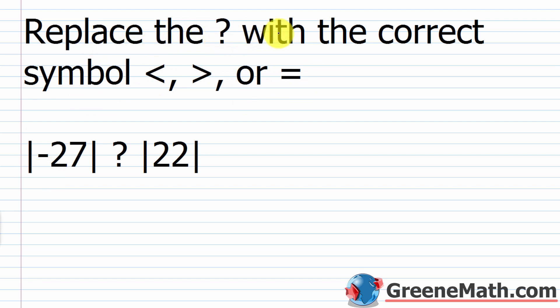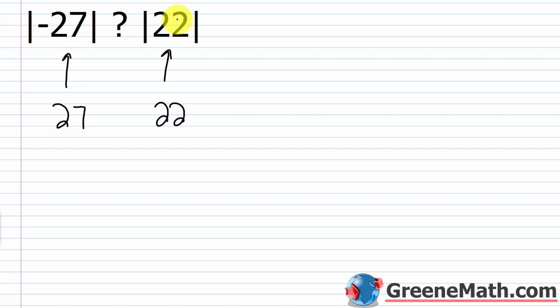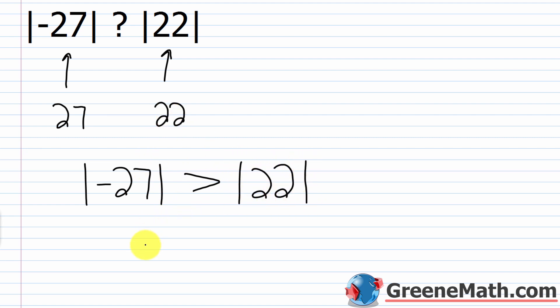Now we want to replace the question mark with the correct symbol: less than, greater than, or equal to. For the first problem: the absolute value of negative 27 versus the absolute value of 22. The absolute value of negative 27 is 27, and the absolute value of 22 is 22. Since 27 is larger, the absolute value of negative 27 is greater than the absolute value of 22. Point the symbol toward the smaller number.